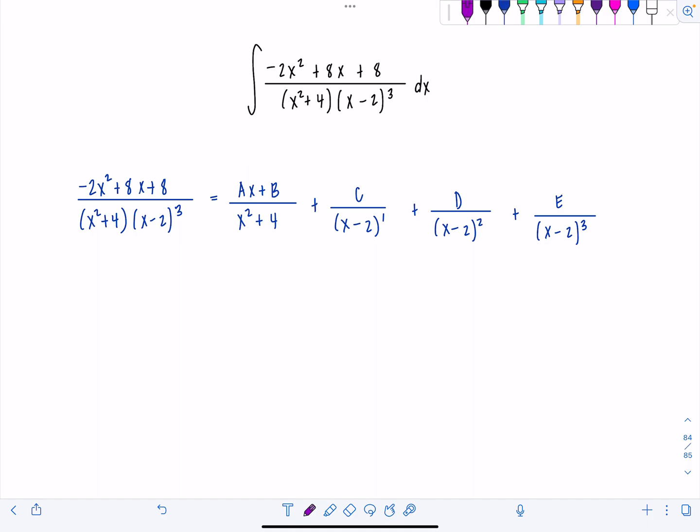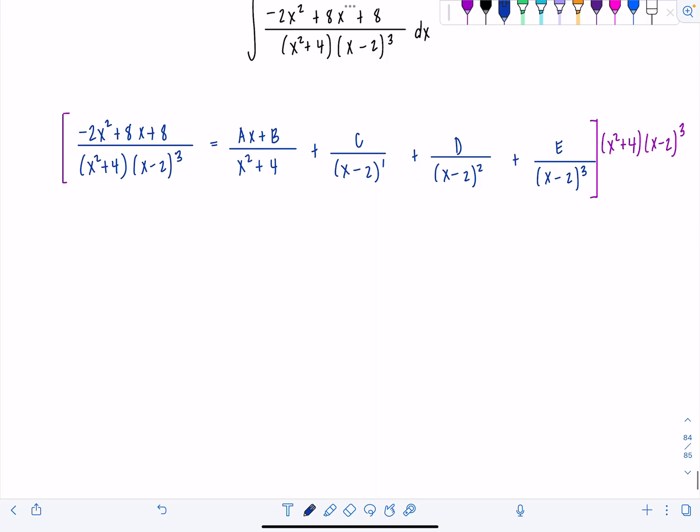And then the first part proceeds as normal. We just multiply through by the LCD, which in this case is x squared plus 4 times x minus 2 cubed. And now let's see what we're left with. So negative 2x squared plus 8x plus 8 equals ax plus b times x minus 2 cubed plus c times x squared plus 4 times x minus 2 squared, D times x squared plus 4 times x minus 2, and then e times x squared plus 4. Don't start multiplying this all out. You will drive yourself crazy.